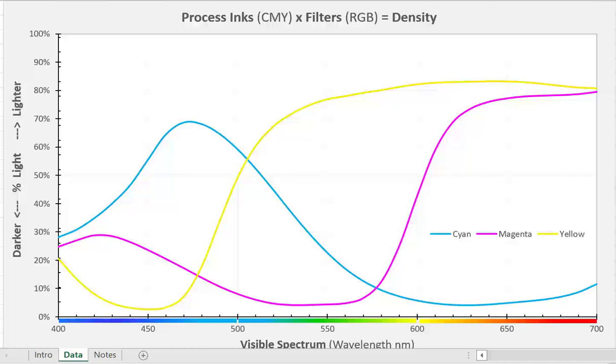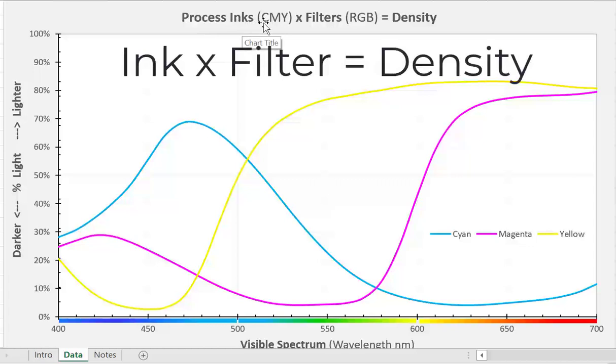In today's presentation, I want to talk to you about how you calculate density with filters. So if we take a look at the title of this graph here, I'm saying that if you take a process color ink—cyan, magenta, and yellow—and you look at it through a particular filter—red, green, and blue—you can calculate its density.